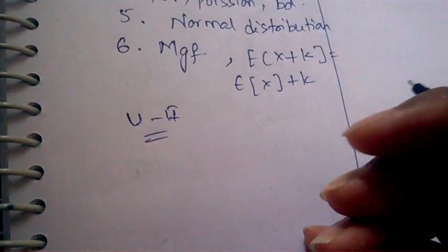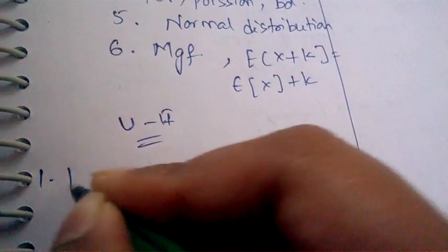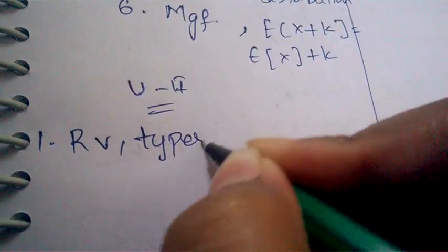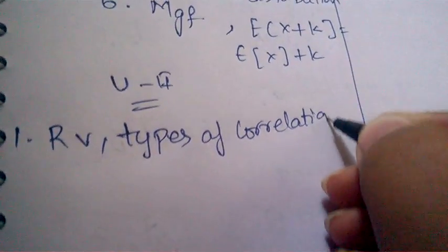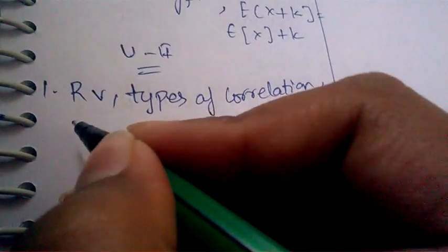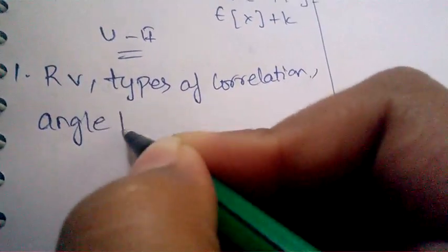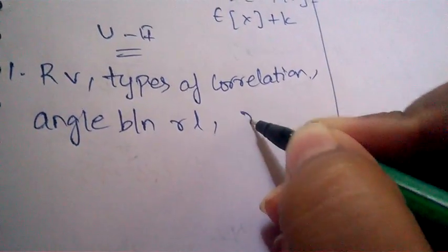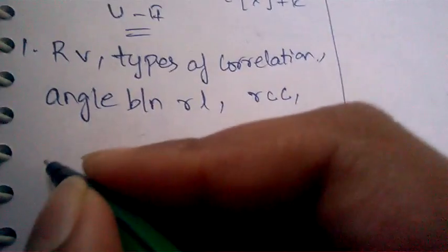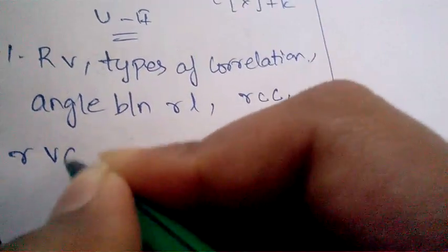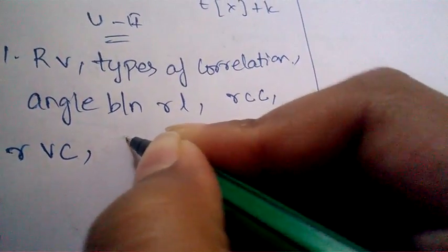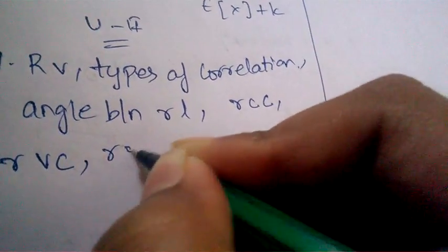Coming to unit 2, the important questions are: write about random vector — this is one of the most important questions. What are the types of correlation? Angle between regression lines. What is rank correlation coefficient? And what are random vector concepts?